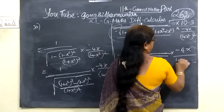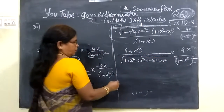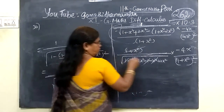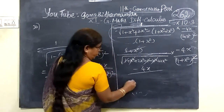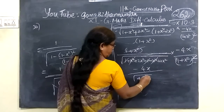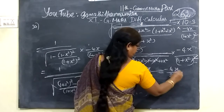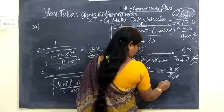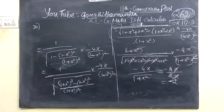Minus 4x by 1 plus x to the power 4. Cancelling terms: minus plus is minus. After cancellation, we get minus 4x divided by root of 4x squared, then minus 2 by 1 plus x squared. This is the answer.